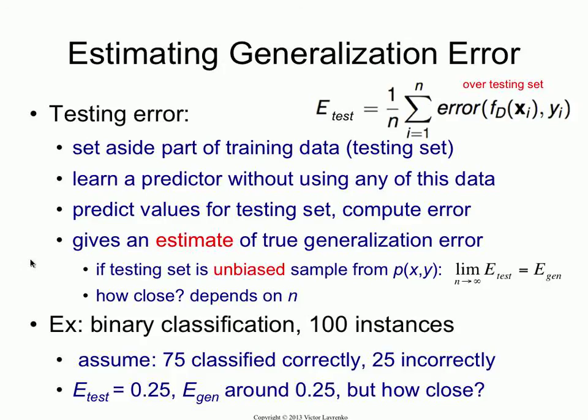What you do is you take your training data, you split it randomly — you take a certain portion of it, maybe a half or a quarter, you set it aside, and you never ever let your classifier look at it. Because if it looks at it, it'll overfit to it. And if you don't let it look at it, then it can't possibly have overfit because it hasn't seen it. So you take the other part of the data — that will now be called your training set — and you train the classifier on it, let it estimate all of its parameters, and then run it on the testing set. That allows you to compute an estimate of how well your classifier would generalize to data it hasn't seen before.